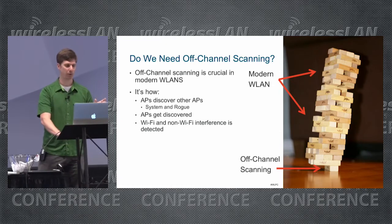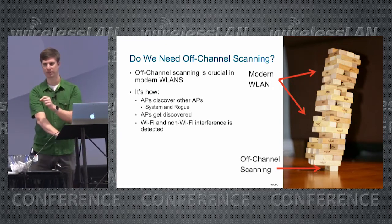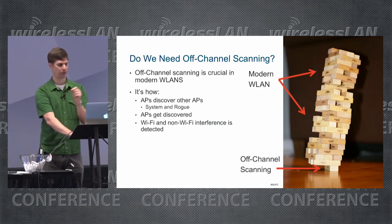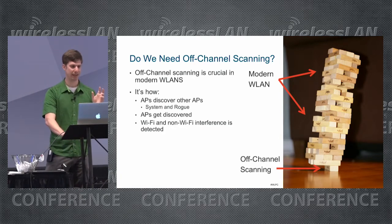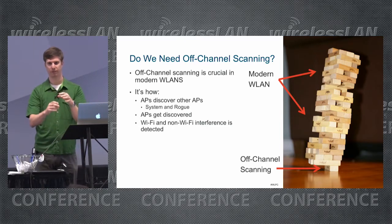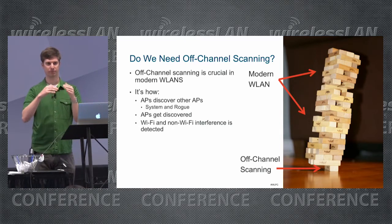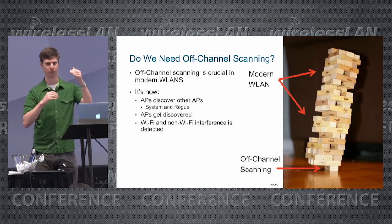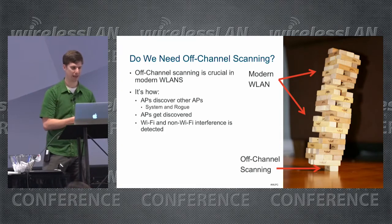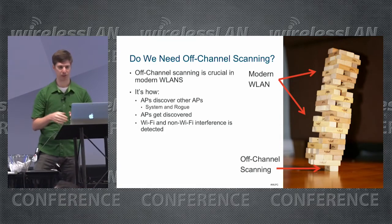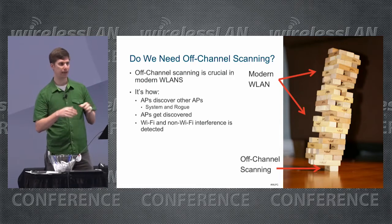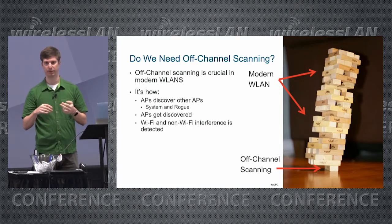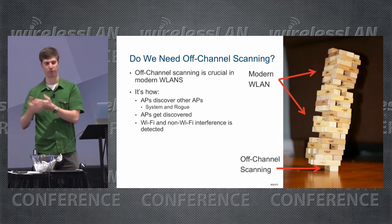Off-channel scanning is how access points discover other access points — both other APs within the Wi-Fi system and rogue access points. It's how APs get discovered (transmit versus receive). It's also how the access point discovers Wi-Fi and non-Wi-Fi interference to make decisions for RRM, for example.